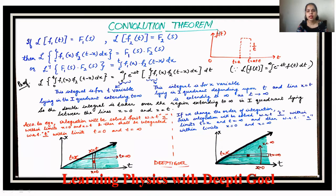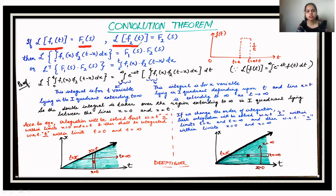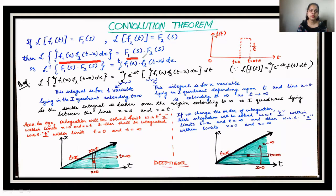The convolution theorem is given as follows: if the Laplace of the first function is L{f₁(t)} = F₁(s), and the Laplace of the second function is L{f₂(t)} = F₂(s), then the Laplace of the integral from 0 to t of f₁(x)·f₂(t−x) dx is simply the multiplication of the two Laplace transforms, F₁(s)·F₂(s).